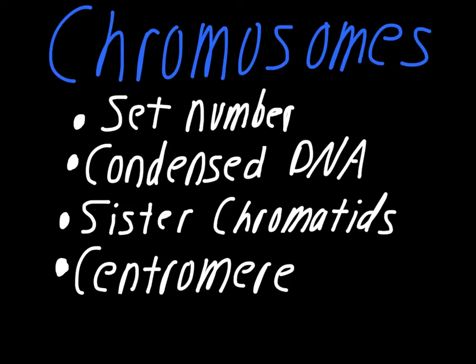To recap the major ideas: each of your cells has a set number of chromosomes — for people, we have 46; fruit flies have eight; carrots have 18. Each species has a different number. Chromosomes are condensed DNA — the DNA is normally a mess inside of the nucleus, but it condenses down so it can move around in an organized fashion during cell division. Sister chromatids are the term for two identical chromosomes bound together at the centromere in the middle; that's what holds them together.